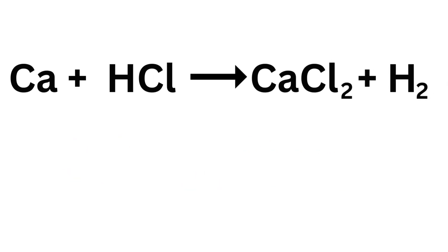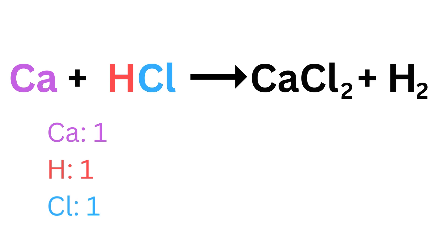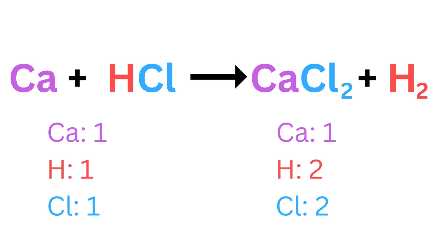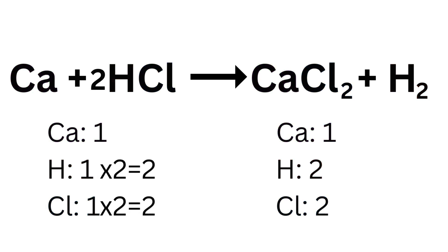Now let's look at the reaction between calcium and hydrochloric acid. Here's the unbalanced equation. Calcium (Ca) plus hydrochloric acid (HCl) reacts to form calcium chloride (CaCl₂) plus hydrogen gas (H₂). Counting the atoms on each side, we find one calcium, one hydrogen, and one chlorine on the left, and one calcium, two hydrogen, and two chlorine on the right. To balance the hydrogen and chlorine atoms, we need two hydrochloric acid molecules on the left. Now we have one calcium, two chlorine, and two hydrogen atoms on both sides. The equation is balanced.